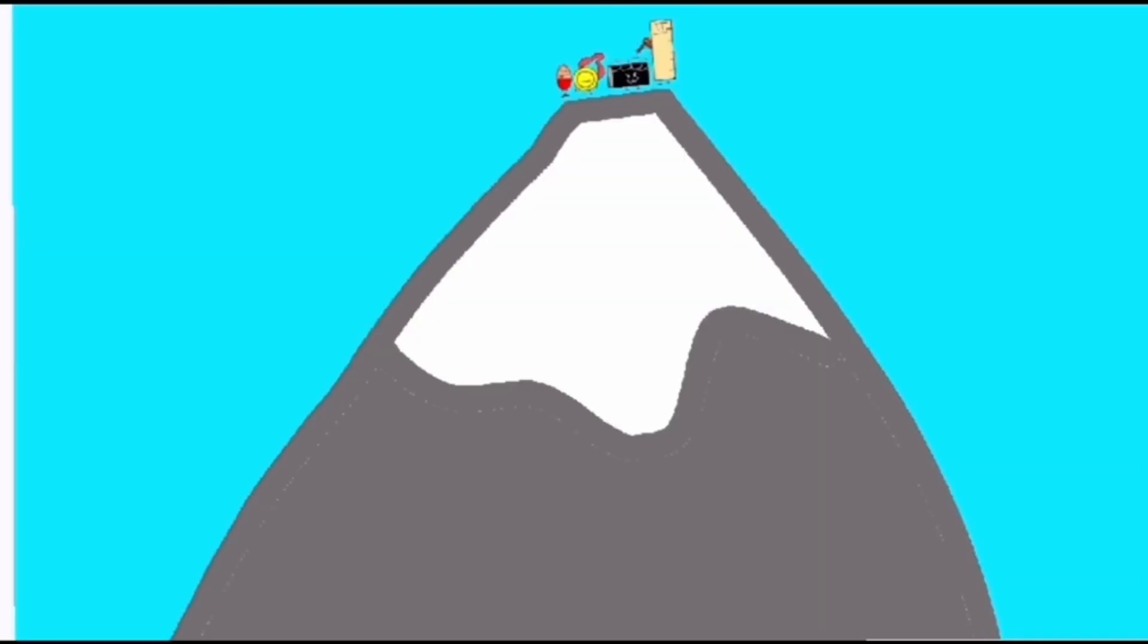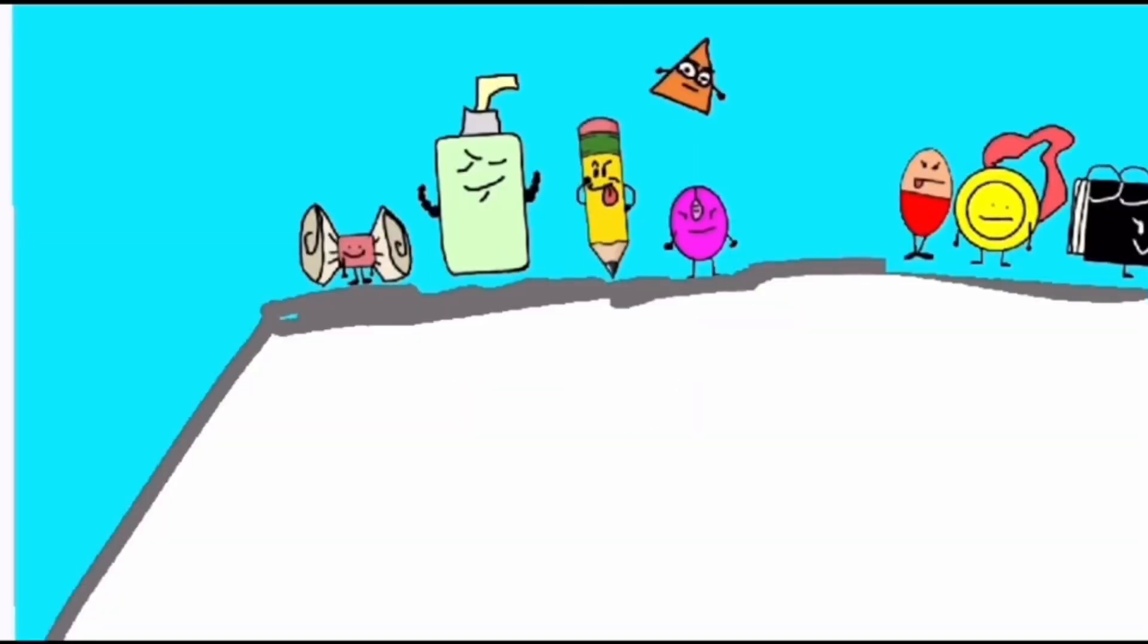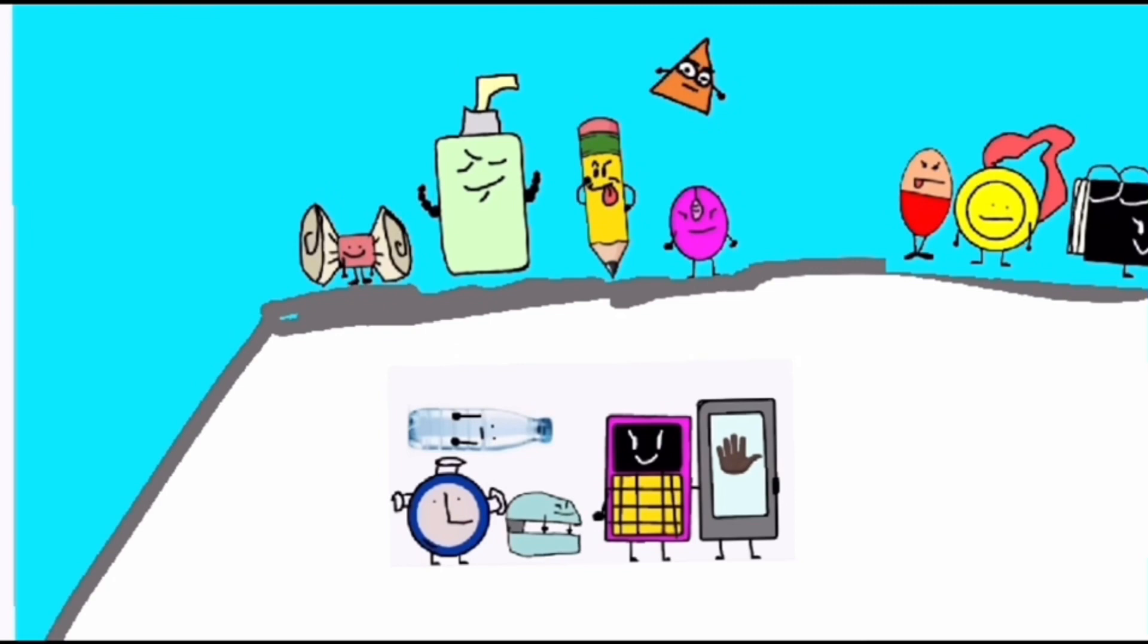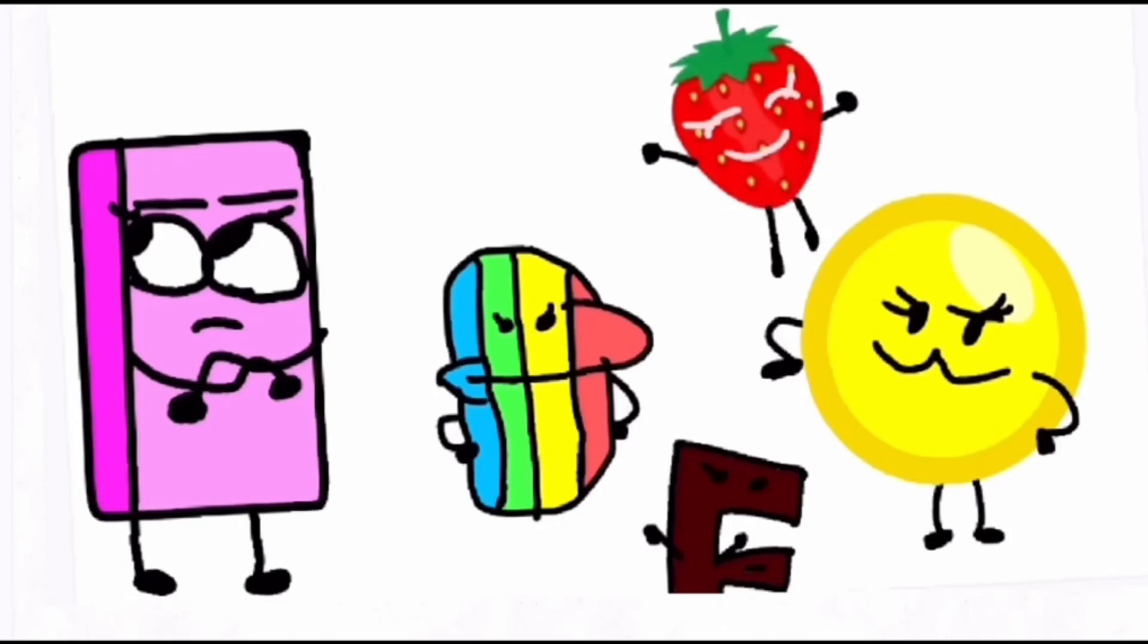The cooler kids win the challenge first, followed by the totally machos and the fab five. So the creepy crows are up for elimination.